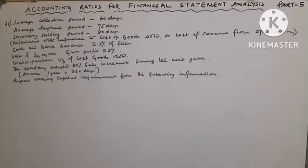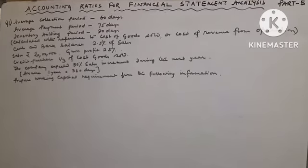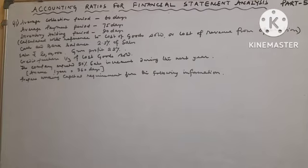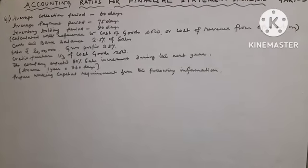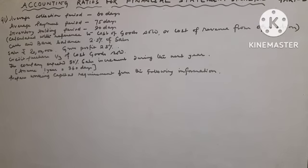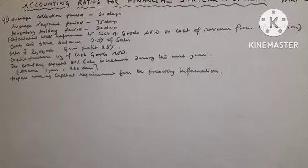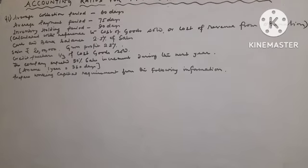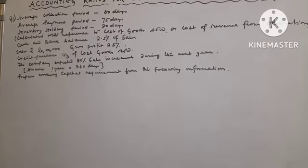Gross profit 25%, credit purchase 1 third of cost of goods sold, the company expected 50% sales increment during the next year. Assume 1 year equals to 360 days, prepare working capital requirement from the following information.